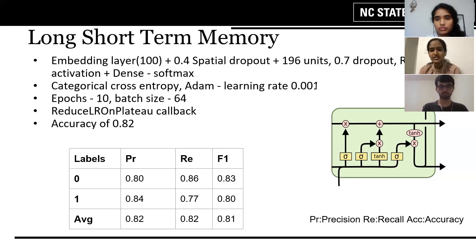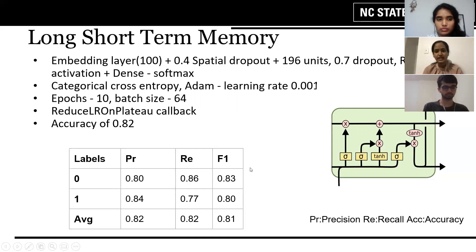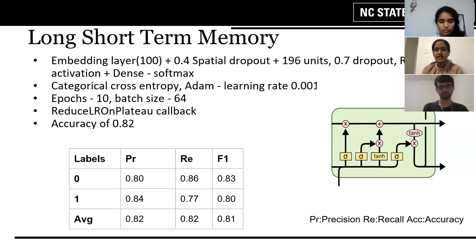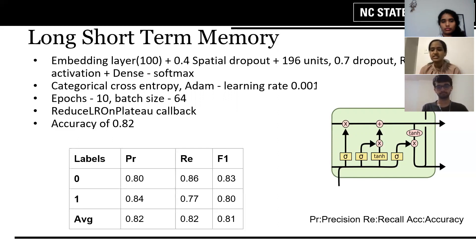Our model performs optimally for about 10 epochs and a batch size of 64. To ensure better performance, we use a callback for reducing the learning rate — if the model does not improve on the validation loss for three continuous epochs, we decrease the learning rate by a factor of three until it diminishes to 10 to the minus five. We achieved an accuracy of 0.82 with this model and an F1 score of 0.81.